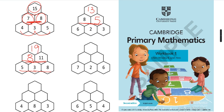These are called addition walls and subtraction walls too. When we are going from bottom to the top, these are addition walls. When the top number is given and we are coming from top to bottom, the same walls are called subtraction walls.